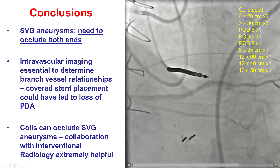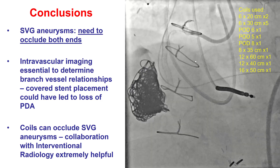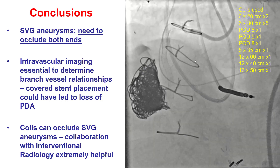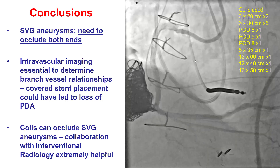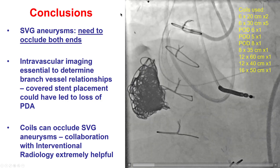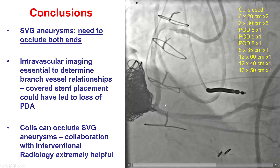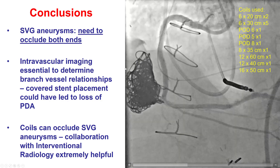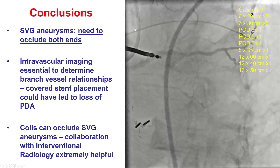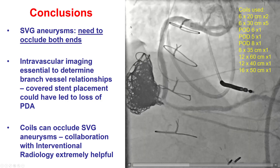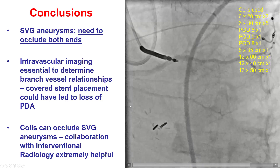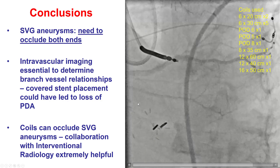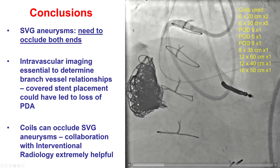The important message from this case is that when a patient presents with a saphenous vein graft aneurysm and we recanalize the native coronary artery, we have to occlude both ends of the bypass graft to achieve sealing of the SVG aneurysm. In our case, we had only occluded the proximal anastomosis of the SVG. However, there was still retrograde flow from the native coronary artery, and as a result, the aneurysm did not seal and was still at risk of rupture.